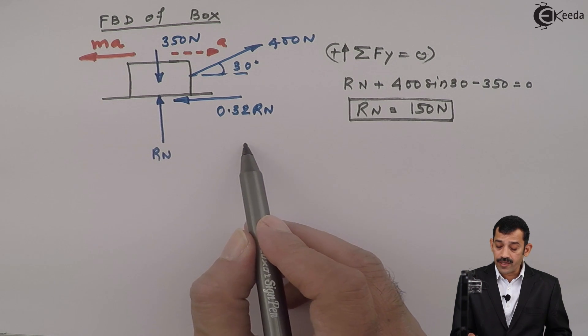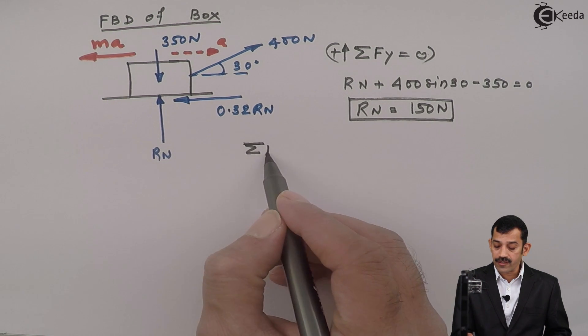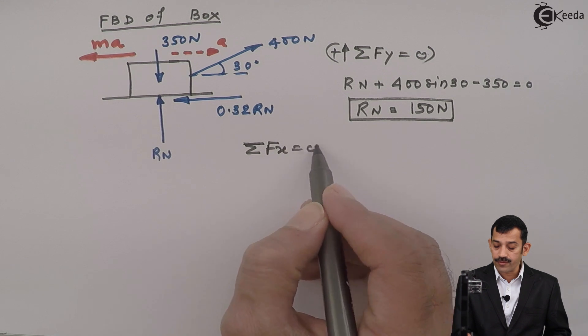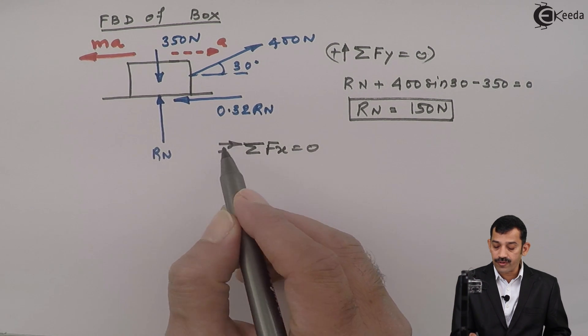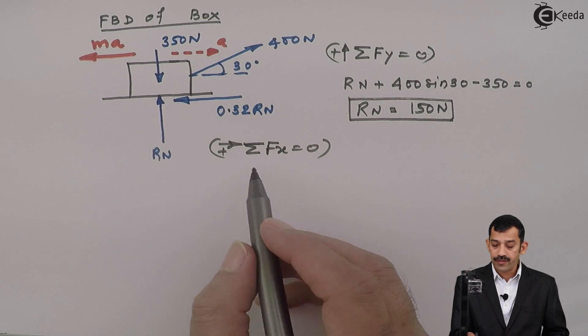That means if we will apply equation along x axis, what we will get here? Summation of Fx equal to 0, assuming rightward force is positive. Now which includes inertia forces.